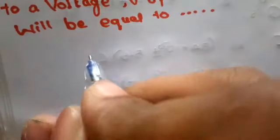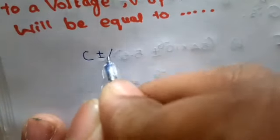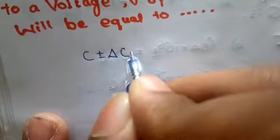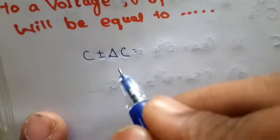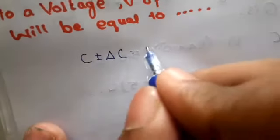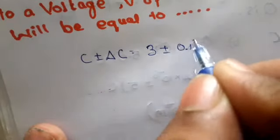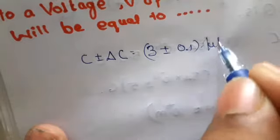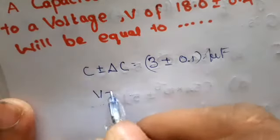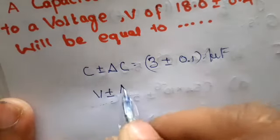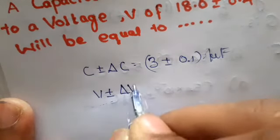Then they ask for the charge. We know C with error is given as plus or minus delta C, that is 3 plus or minus 0.1 microfarad, and the voltage V plus or minus delta V.